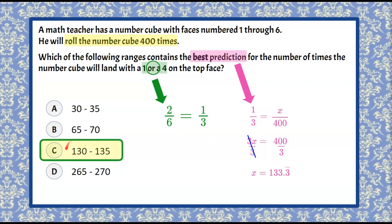So now we're going to go to our answer choices and see that the probable outcome is going to be between 130 and 135 times. We will roll a 1 or a 4 out of the 400. So our answer choice here is C.